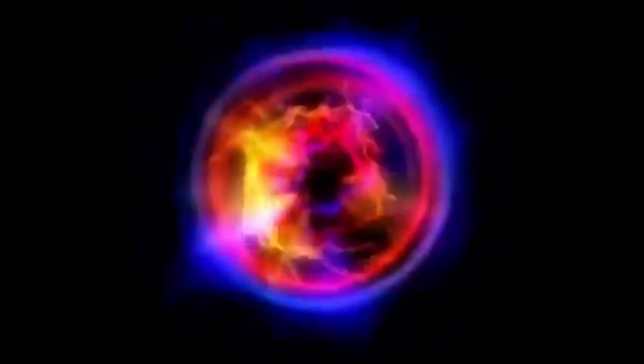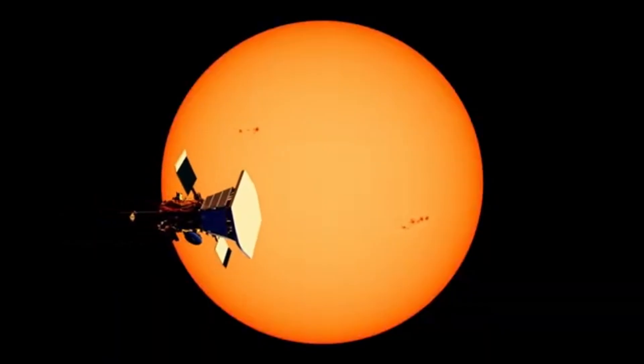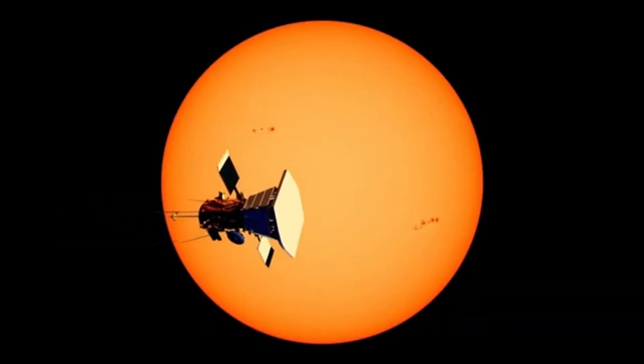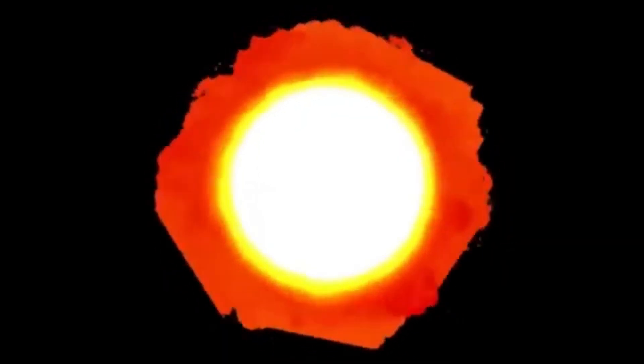What would a supernova mean for us? First, don't worry. Earth is safe. At 725 light years, Betelgeuse is too far to harm us with radiation or debris. But the spectacle would be unforgettable. For weeks, it would dominate the night sky, a beacon in Orion's shoulder that outshines everything else. It would be a once-in-a-millennium event, the kind that ancient astronomers would have recorded with awe.